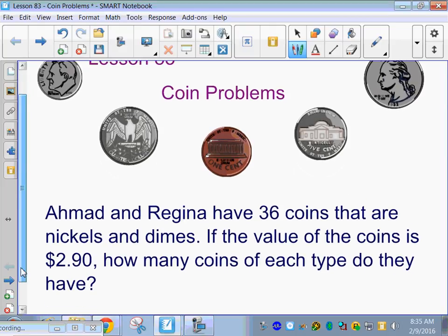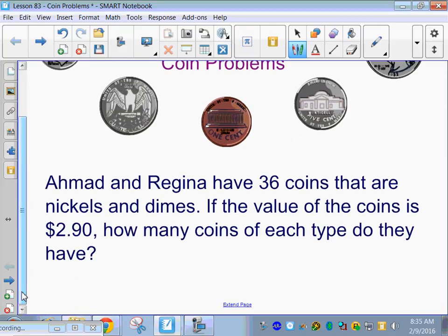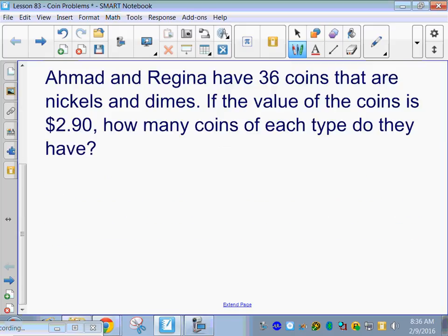So, coin problems. Ahmad and Regina have 36 coins that are nickels and dimes. If the value of the coins is $2.90, how many coins of each type do they have?